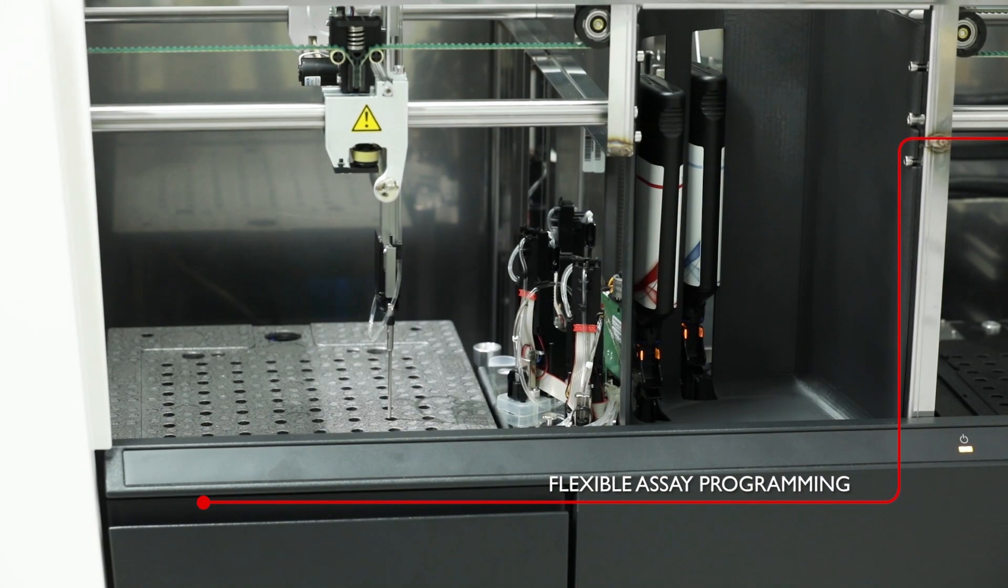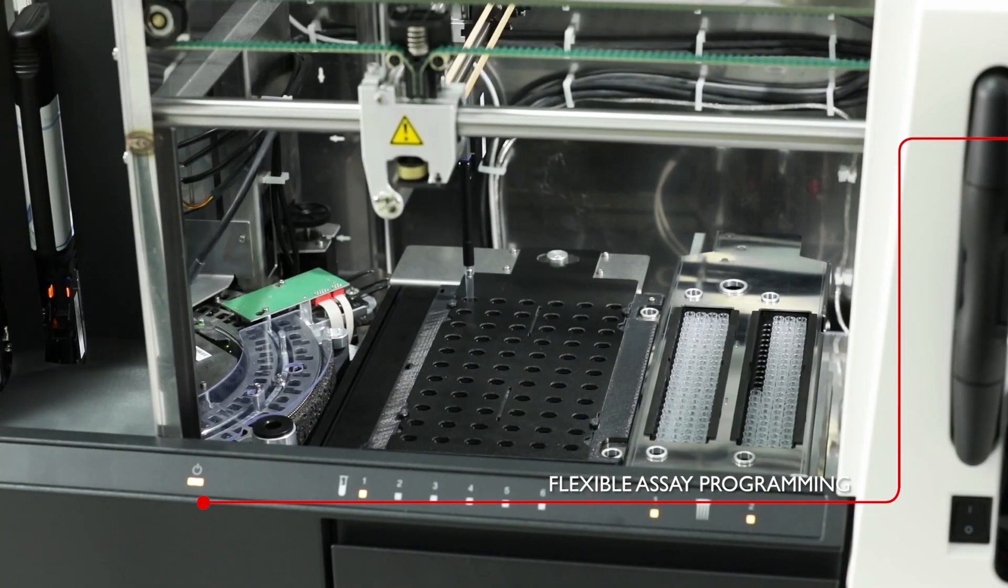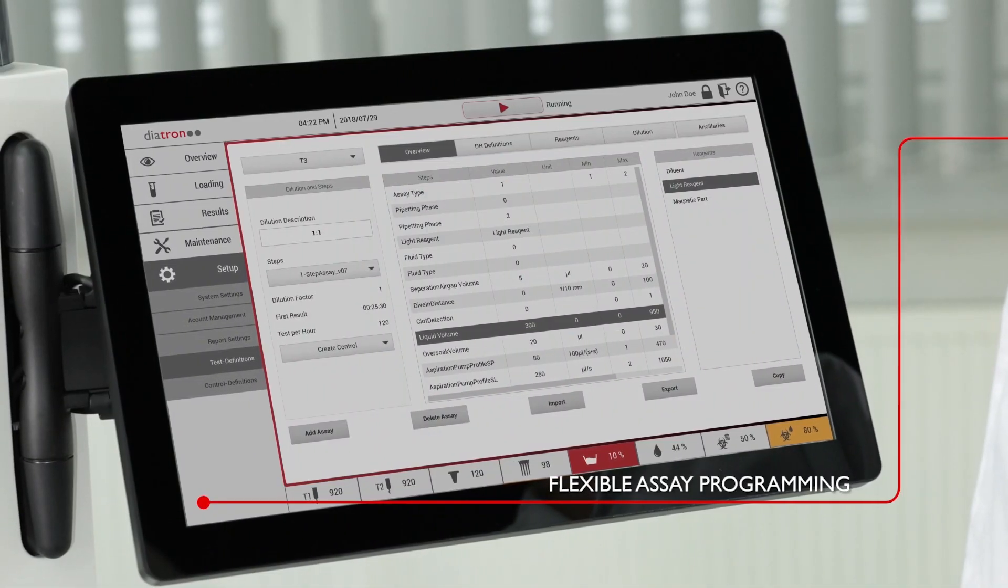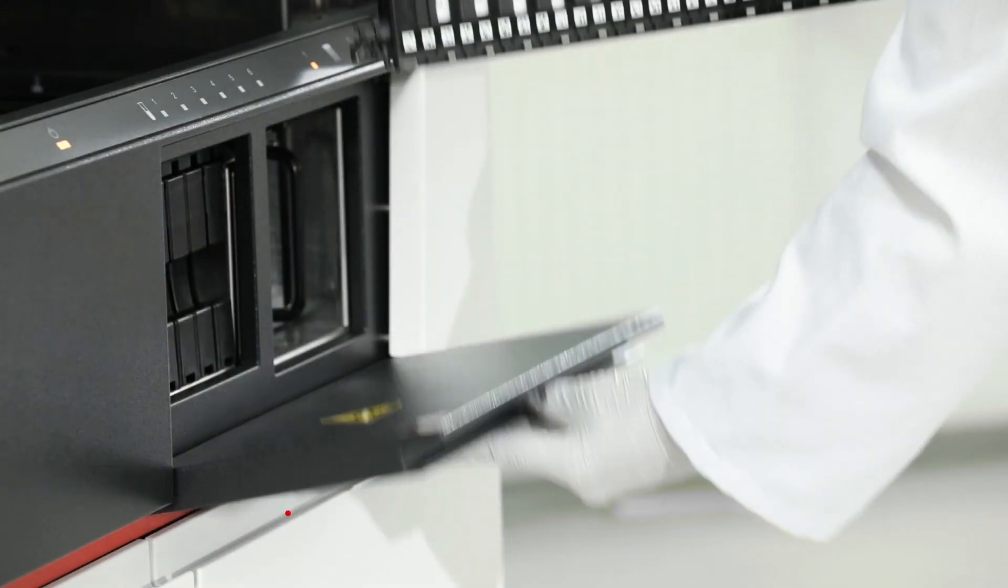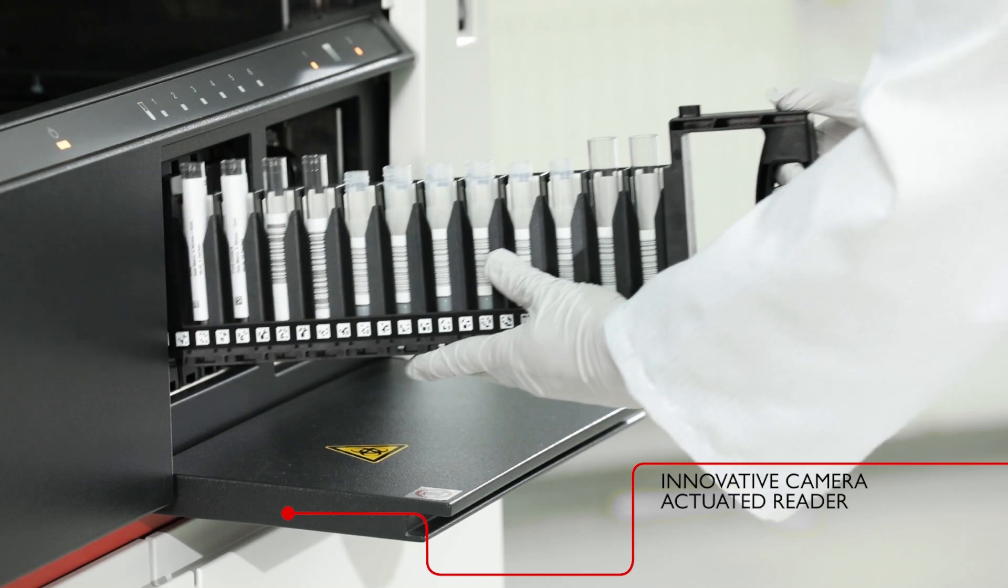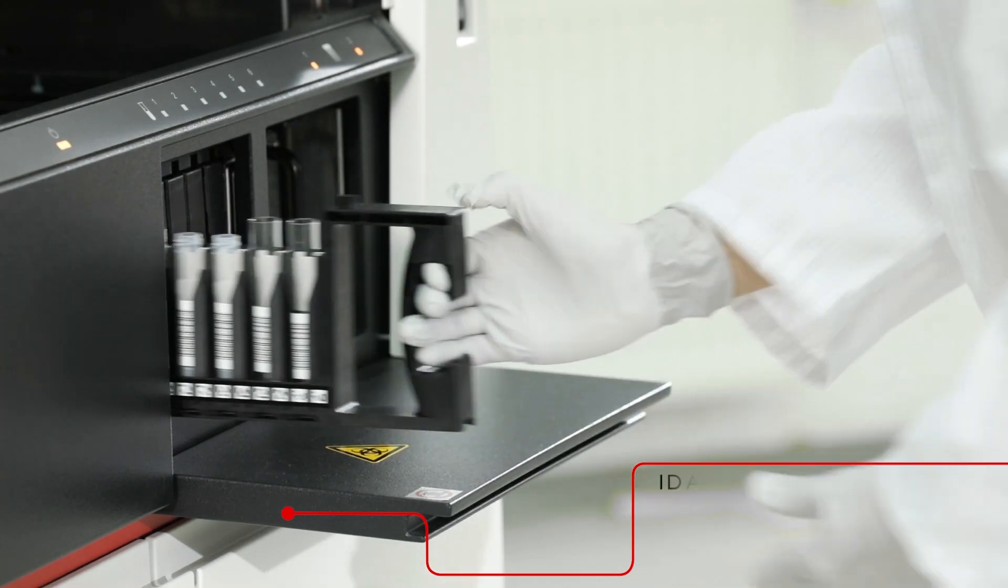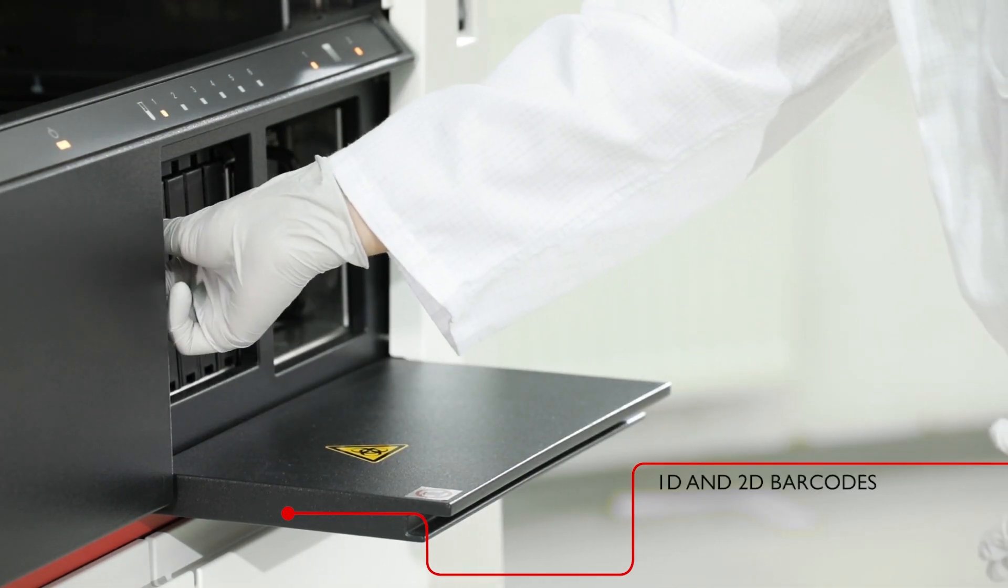Assay developers benefit from a highly flexible system. The test definition editor allows modular assay programming. The camera-based reader identifies both 2D barcodes and the presence of a wide variety of tubes.